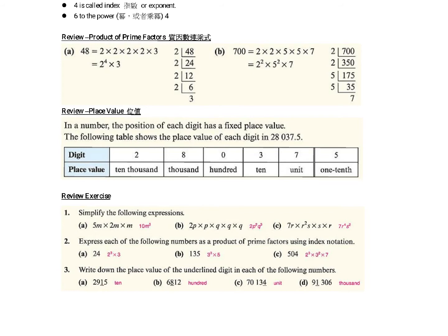The first part is about the product of prime factors, 質因素連成式. You need to break it into expanded form.